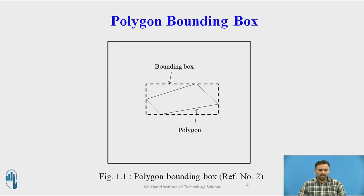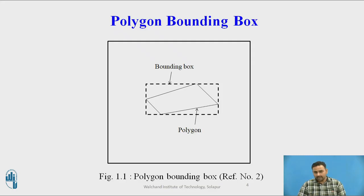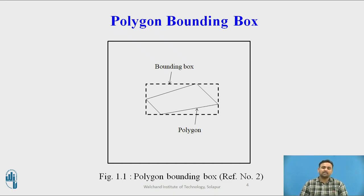In this diagram, we can see the bounding box. The whole square is the display, but the polygon is residing only within a short area inside it. If we scanned each and every line and pixel on the display, it would not be efficient. So we have calculated the bounding box, shown in the dashed line, and the polygon resides within that. The pixels that need to be examined are reduced, and thus the computing time will be reduced.